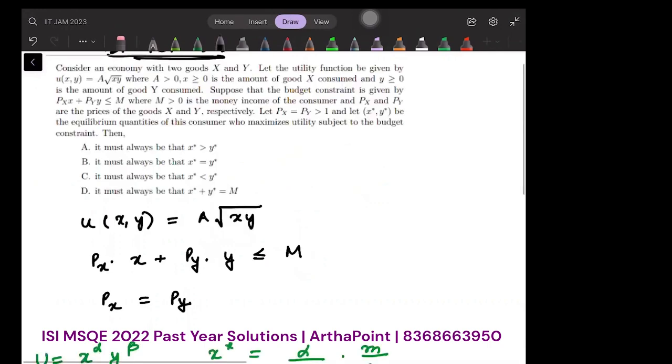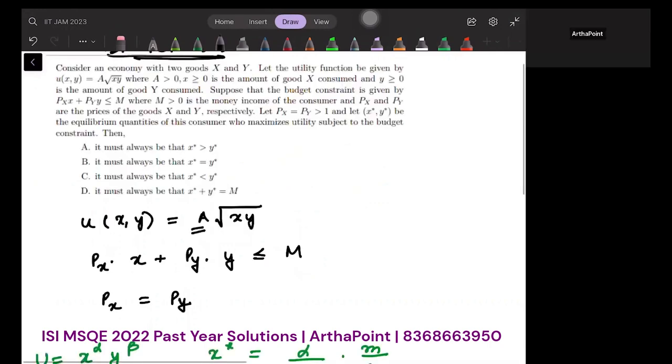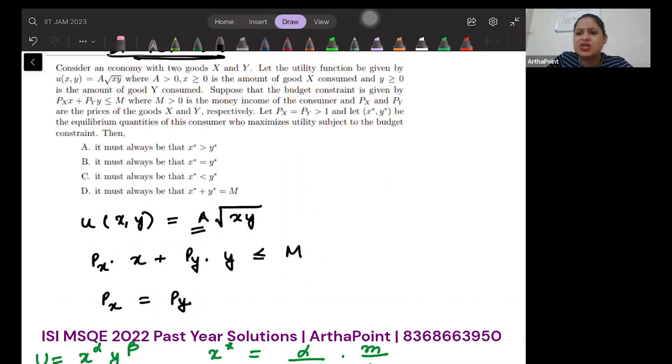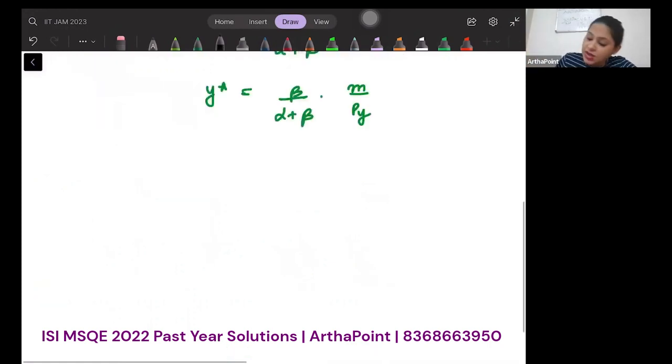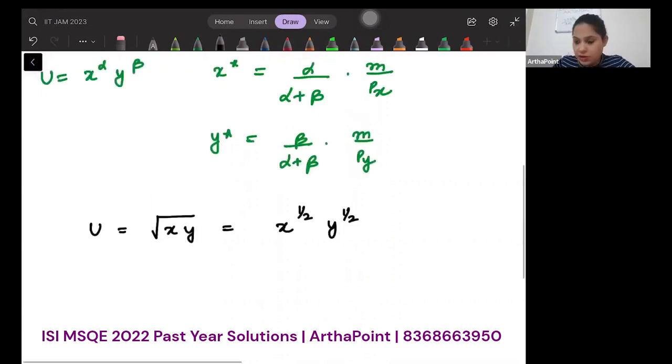a is just a monotonic transformation. I've just multiplied it with something. That does not change anything. My original utility function is just √(xy). So this can simply be written as x^(1/2) and y^(1/2). So α and β both are 1/2.